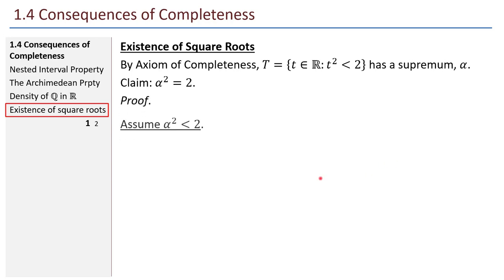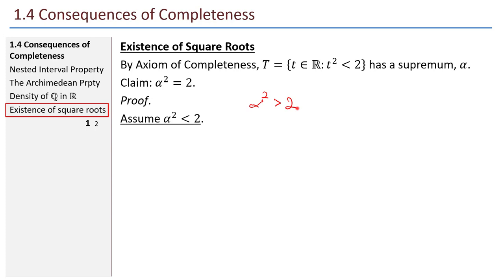Here's the proof strategy. First, assume alpha² < 2 and derive a contradiction. Then assume alpha² > 2 and derive a contradiction again. At the end, we must conclude alpha² = 2.